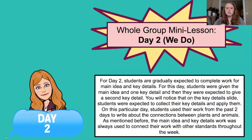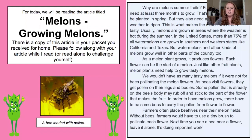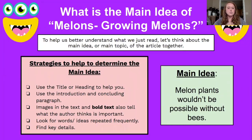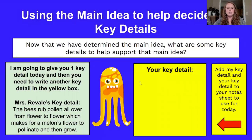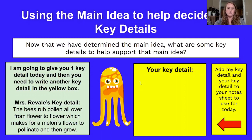For day two, that was the 'We do' day. I would still give them the main idea and talk about it, but then they would have to provide a key detail. For this day it was about growing melons — we would read it, have a short discussion, use the strategies to find the main idea, talk about the main idea, always going back to the article. I would give them one key detail for day two just to give them a nice model before they had to give me a key detail themselves. They had to add that key detail to their note sheet, because today was the day they had to write about the connections with plants and pollination — always using main idea and key details learning to support other learning.